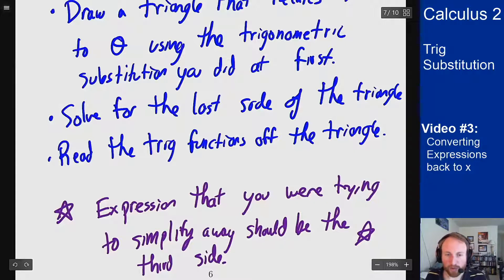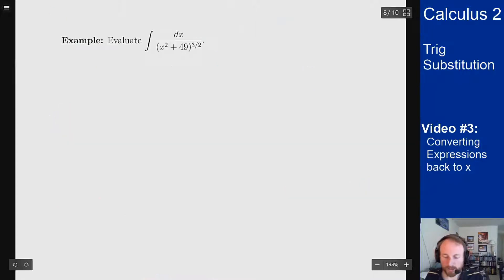Let's do an example of this, and I'll point out what I mean by all these things as we go. So we want to evaluate the integral of dx over x squared plus 49 to the 3 halves. So here we see x squared plus a squared, so that's telling me to use a tangent substitution for this problem. So I should set x to be 7 tangent of theta,